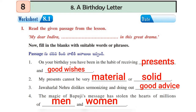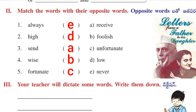Let's see the second roman. Here in this second roman, we have to do the match the following words. Some words are given. We have to match the opposite of that particular word. Opposite of always is never. Opposite of high is low. Opposite of send is receive. Opposite of wise is foolish. Opposite of fortunate is unfortunate.